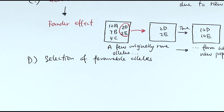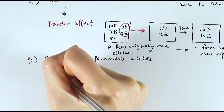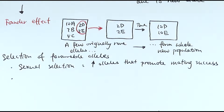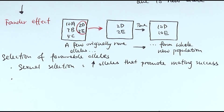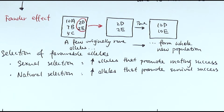The last factor that affects evolution is the selection of favorable alleles, which is a result of mutation. We can think about this in two types. Sexual selection is about how alleles that promote mating success increase in a population — those alleles code for characteristics that make certain individuals more likely to mate successfully, therefore the frequency of those alleles increases as they are passed on.